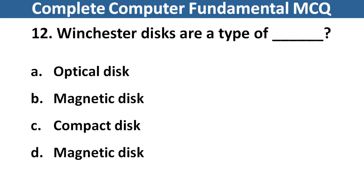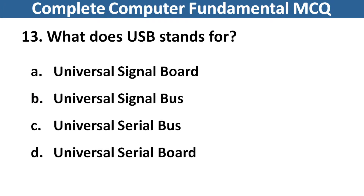Winchester's disks are types of? Right answer is option B, Magnetic Disc. Next question: Which attached memory can assist the server? Right answer is option C, Universal Serial Bus.